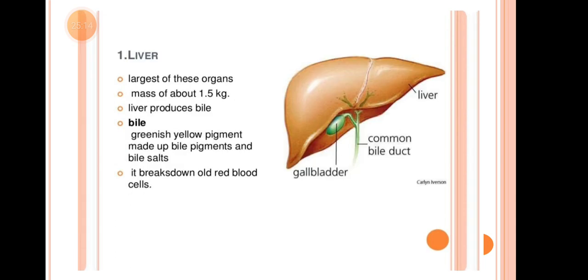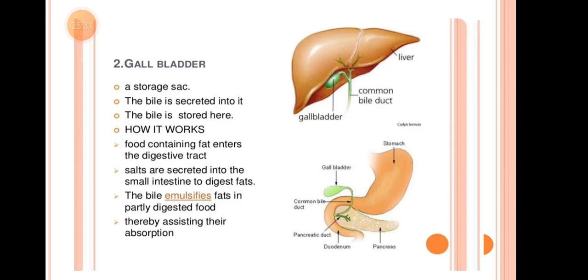What is the Liver? It is a large organ with a mass of about 1.5 kg. The liver produces bile. What is bile? Bile is a greenish-yellowish pigment made up of bile pigments and bile salts. It helps break down old red blood cells.